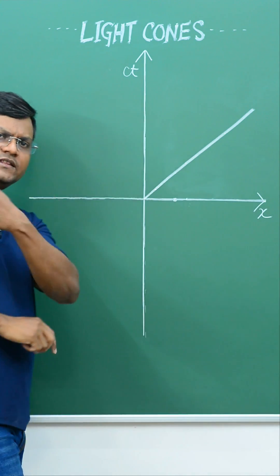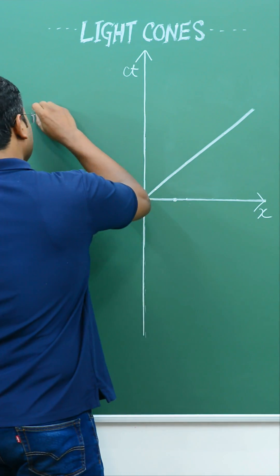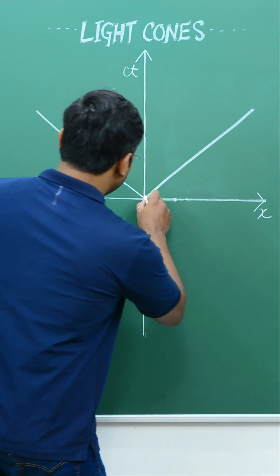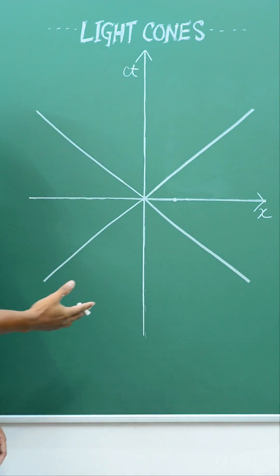A light photon going in the opposite direction will also have a line with the same slope. We can trace out the past trajectories of the light photon by extending in a similar fashion.